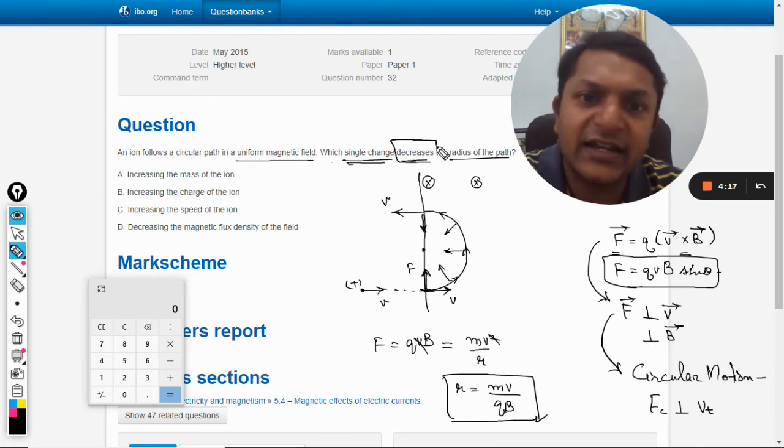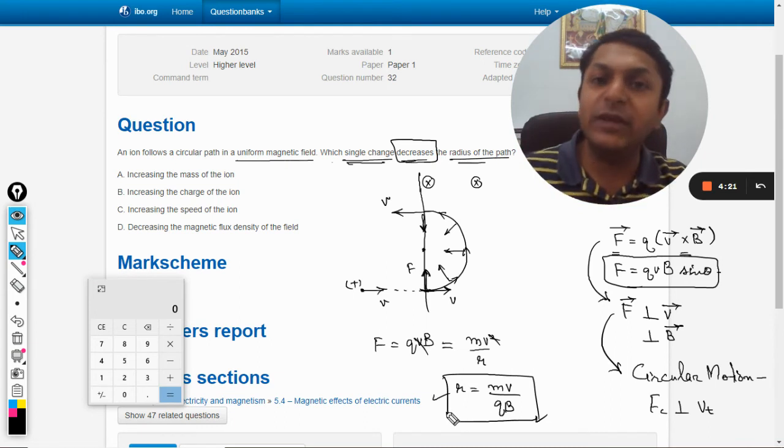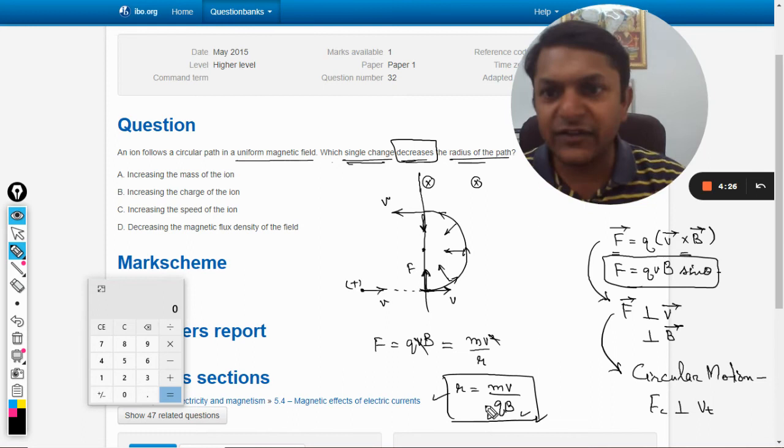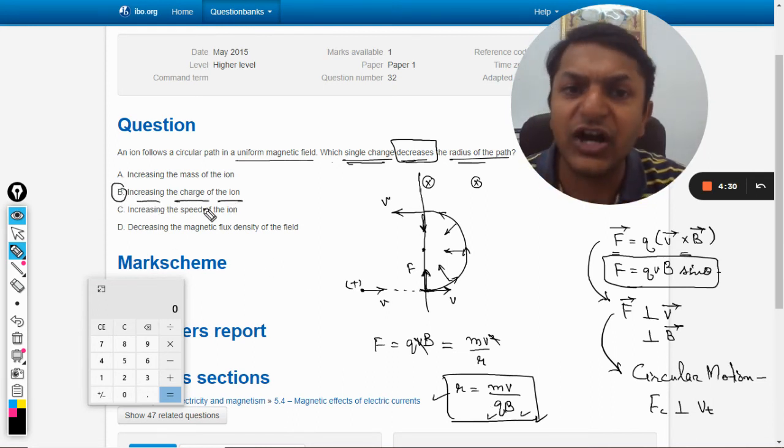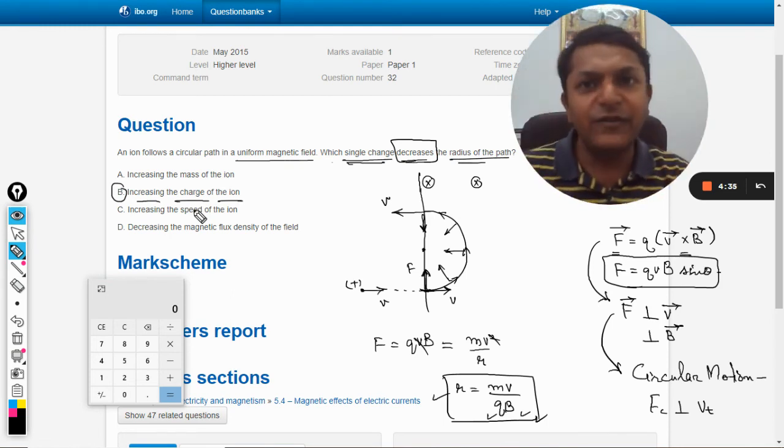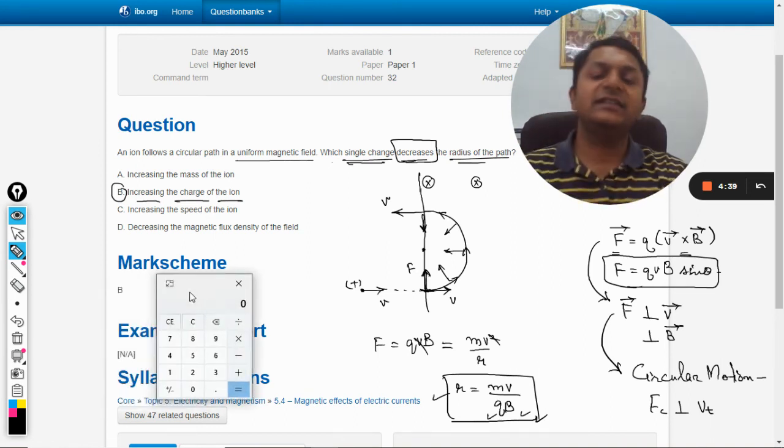Now what is the single change that can decrease the radius of the path? That single change will be either increase the charge or increase the magnetic field. Option B is increasing the charge on the ion, and if you increase the charge, the radius will be decreased. Yes, the answer is B.